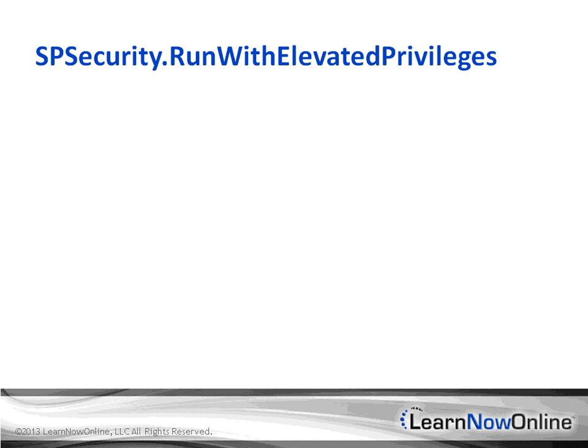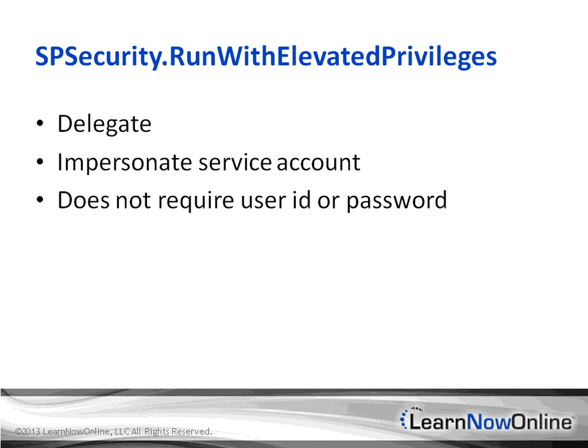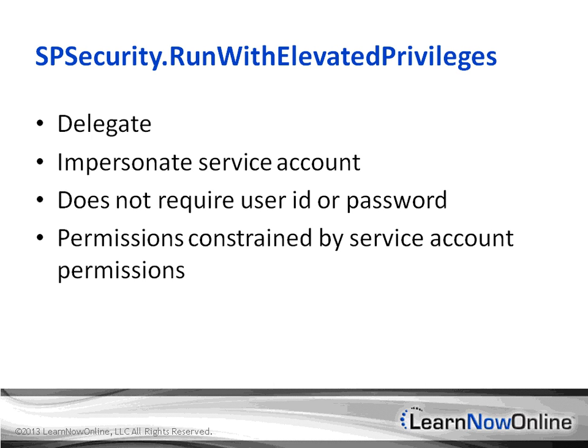SharePoint gives us a static utility method in the SPSecurity class called RunWithElevatedPrivileges. It accepts an anonymous method or an instance of CodeRunElevated, which is a delegate, and it runs with a full control permission set. This effectively allows us to impersonate the service account or the application pool account — no user ID or password has to be entered. Whatever permissions the service account has, when you call RunWithElevatedPrivileges, that's what your code will run as.